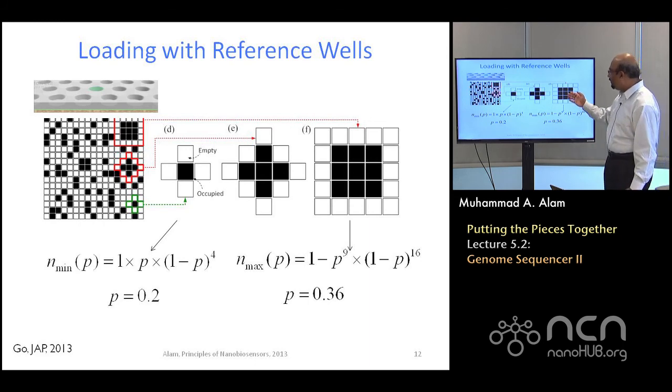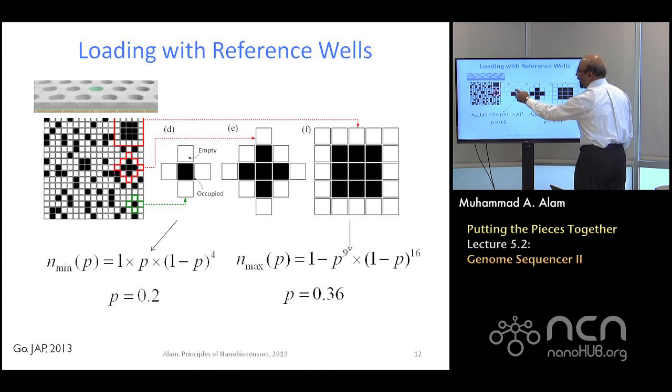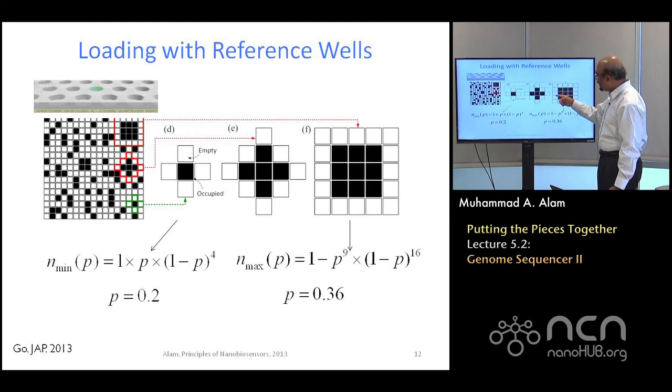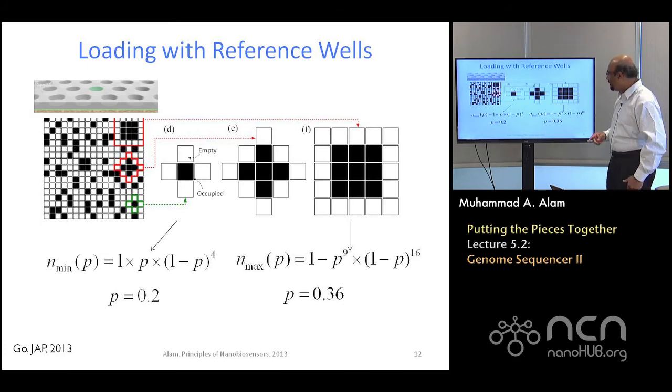On the other hand, if you are happy with the last configuration where you don't want it to be surrounded by the empty wells, one by one, but you can essentially have nine wells surrounded by this white well, so that you can have a reference and a loaded well, reference and a loaded well. If you are happy with this configuration, then the probability that it is occupied P to the power nine, because nine black wells are occupied, one minus P to the power 16, that says that these are unoccupied.